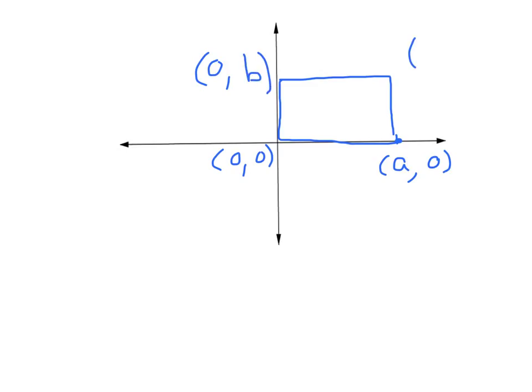And then finally, this set of coordinates over here, it's the same distance over as A is because of the fact that it's right up above A. And it's the same height as this point is. So its coordinates are going to be (A, B).